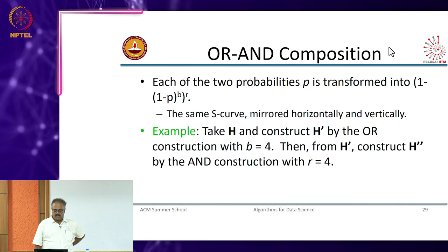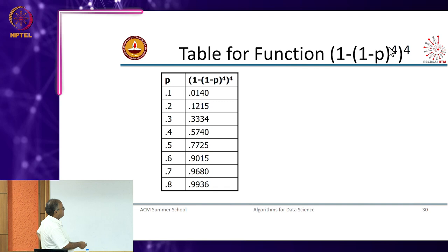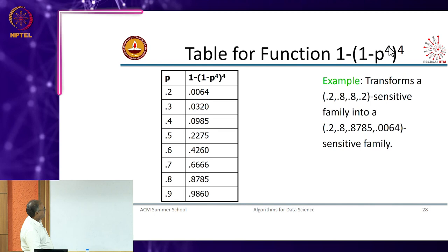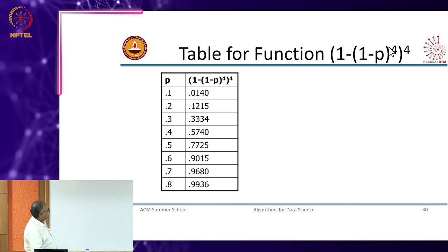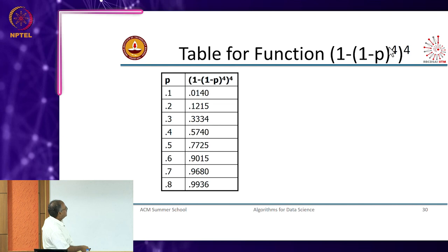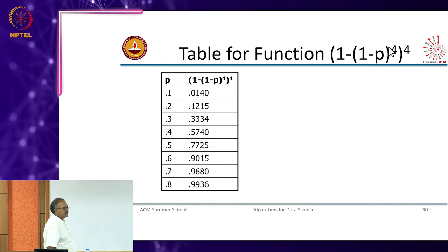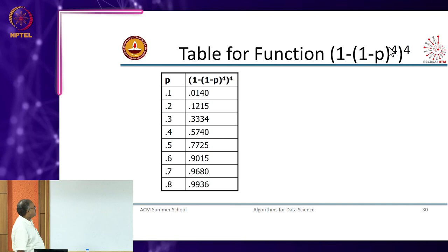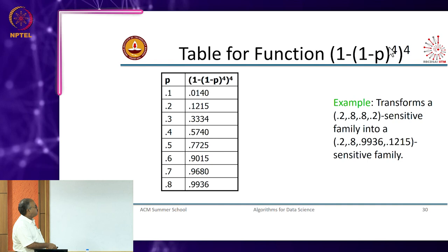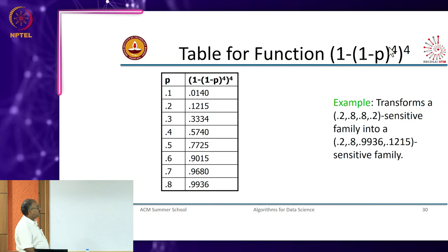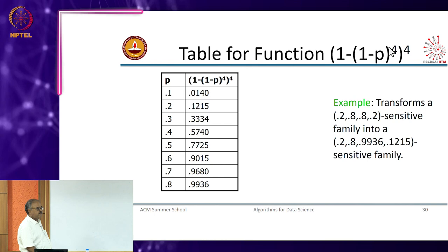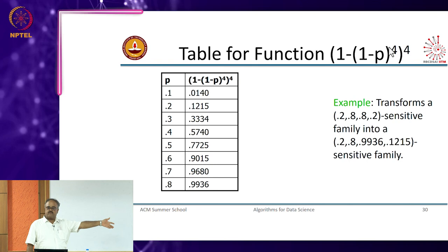Now for the OR then AND composition: first do an OR then an AND. This is going to look like 1 minus p^4 the whole power 4 for the first OR construction, then AND. This takes a 0.2, 0.8, 0.8, 0.2 family — the higher probability goes to 0.9936, but the lower end from 0.2 only went to 0.1215, compared to 0.0064 in the AND-OR case.